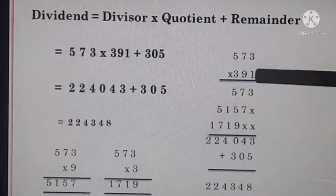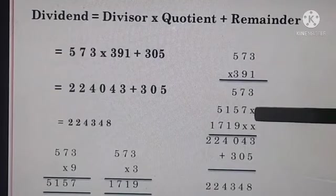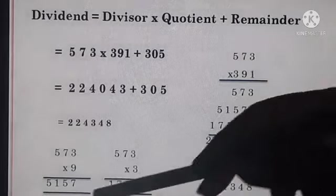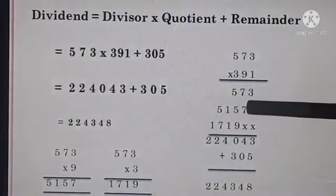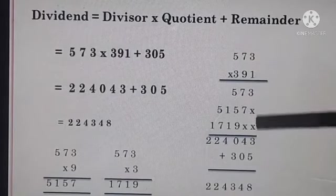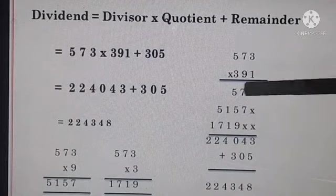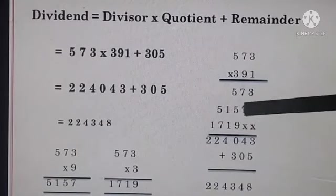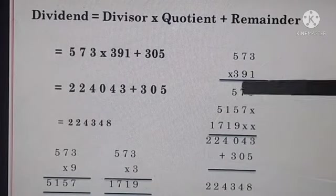Divisor 573 multiply quotient 391 plus remainder 305. 573 multiply 391. First of all you will multiply with 1. 573 multiply 1 will be 573 only. Then second step, multiply by 9. 573 multiply by 9, you will get 5157. So write here starting from 1 square: 5157.